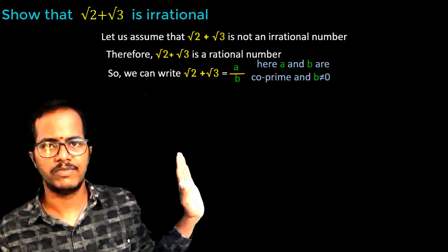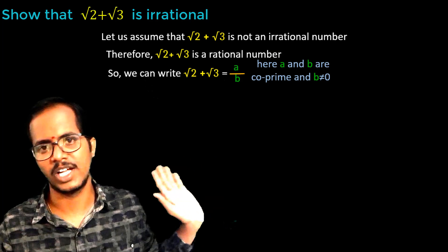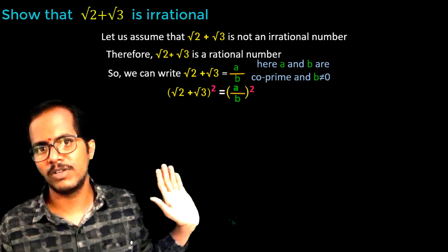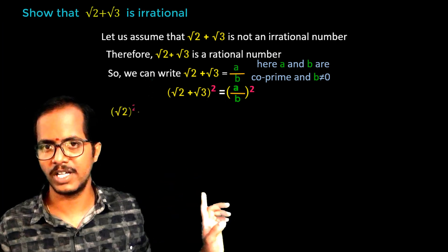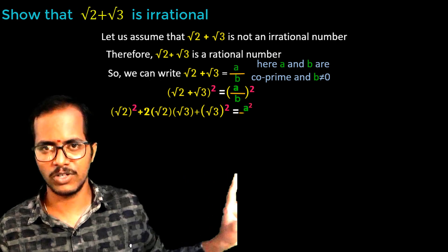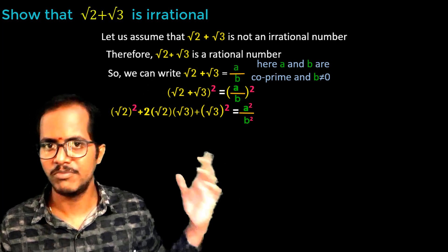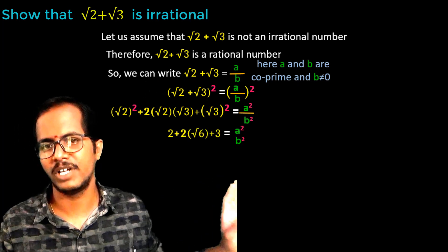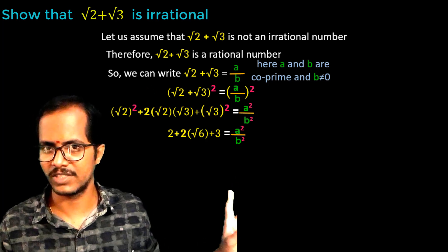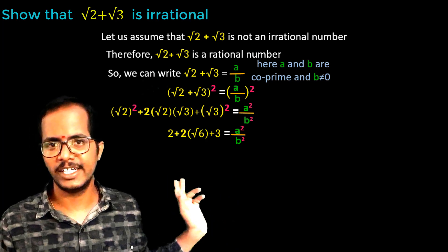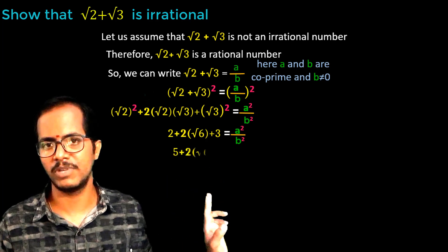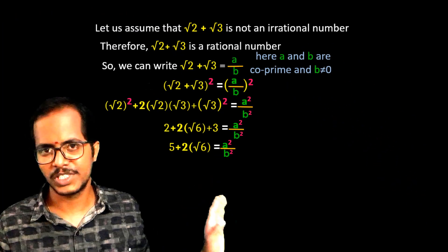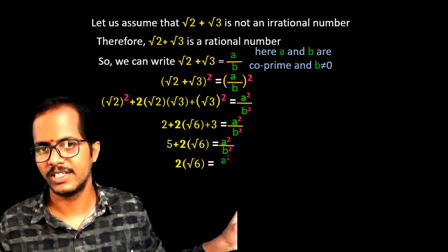For this equation, let us take the square on both sides. On squaring both sides, we get (root 2 + root 3)² = a² by b². Further simplification gives us 2 plus 2 times root 6 plus 3 equals to a² by b². Adding the rational numbers 2 and 3, we get 5. So 5 plus 2 times root 6 equals to a² by b². Further simplification gives us 2 times root 6 equals to a² by b² minus 5.